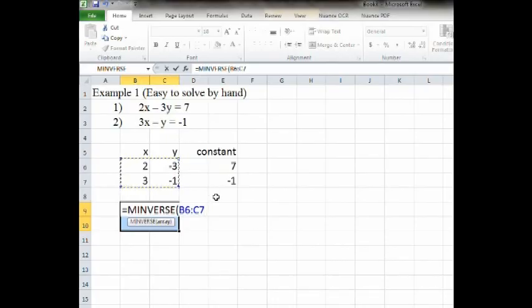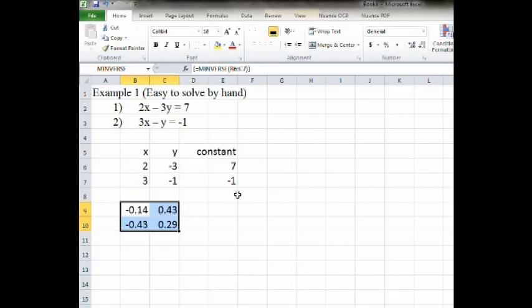Now I could close this with a closed parenthesis and hit enter. But matrix functions in Excel require what's called CSE. That's control, shift, enter. So I'm going to hold down the shift and the control and press enter. When I do that, you'll see that it fills in all of the places in the matrix. If I had done it the other way, I would have only gotten a result in the first cell up here. But now I have all of these. So what this is, is this is the inverse matrix of this matrix right here.